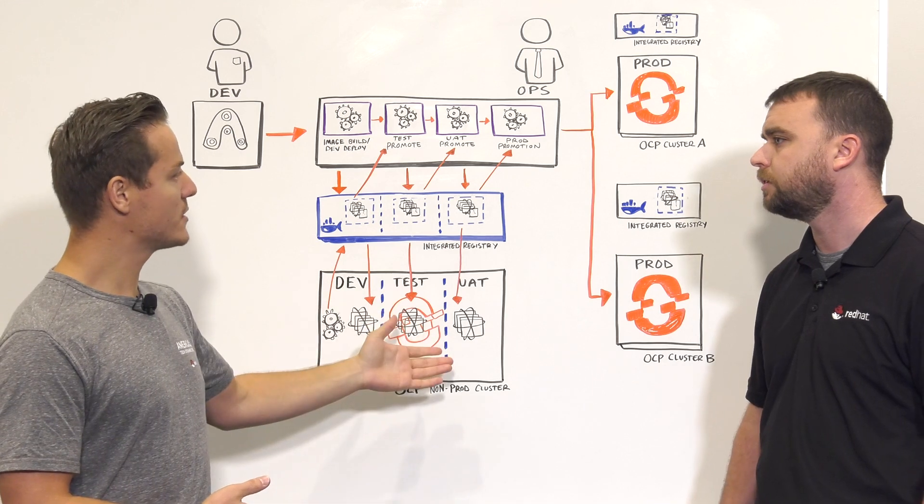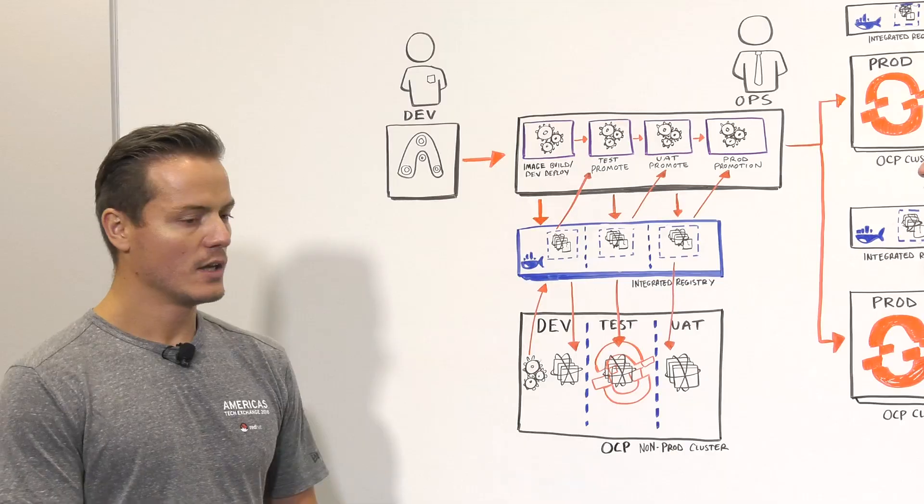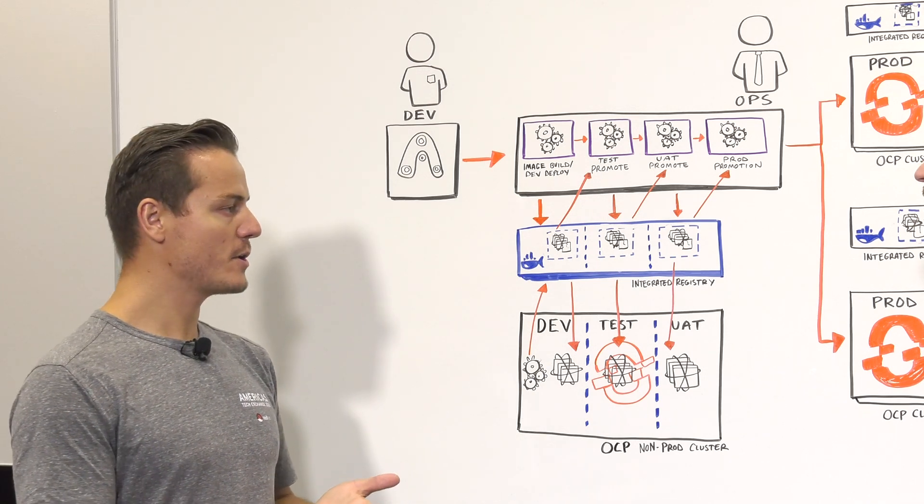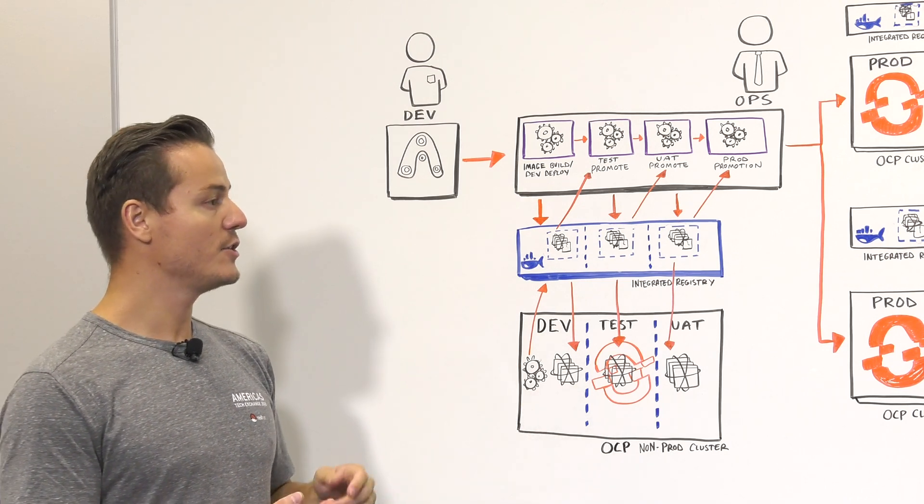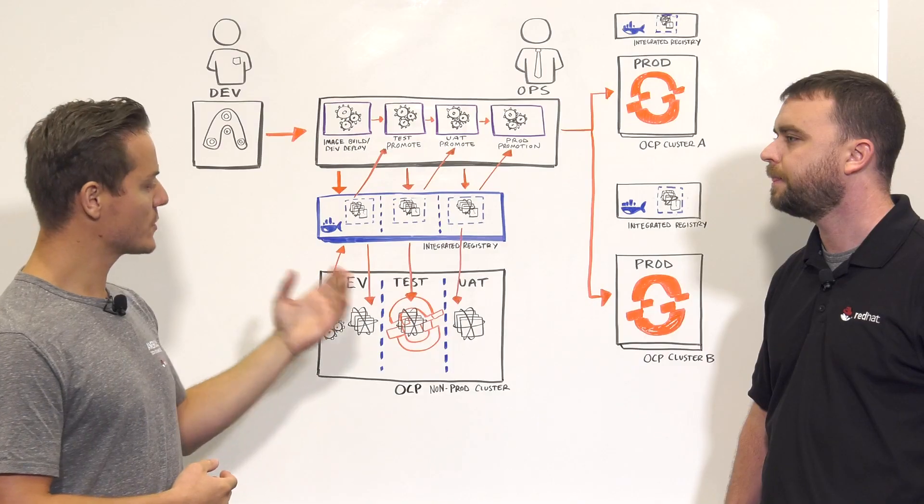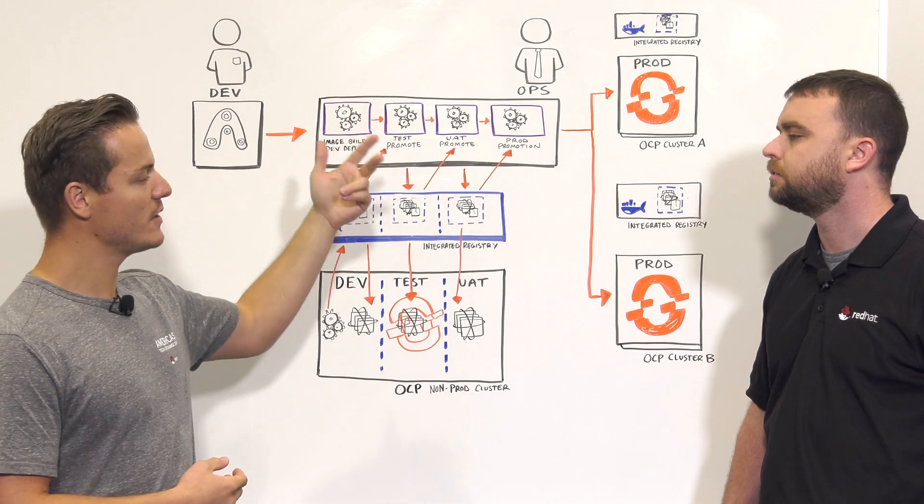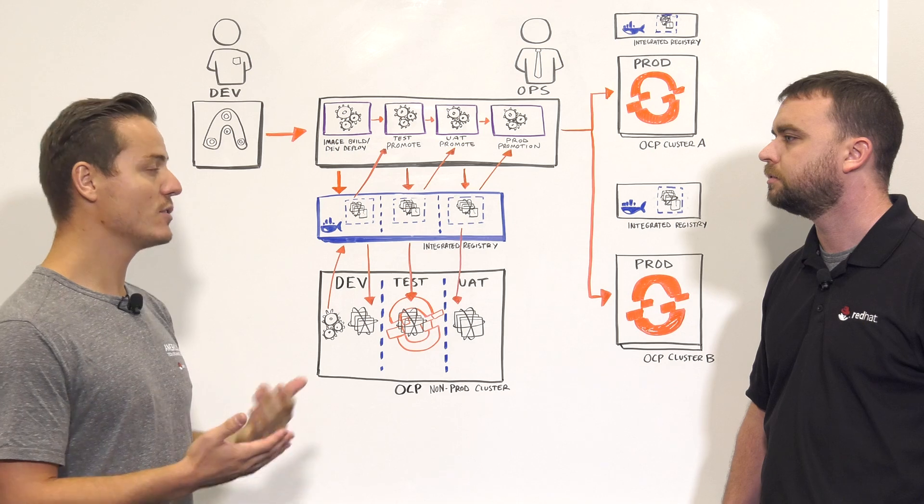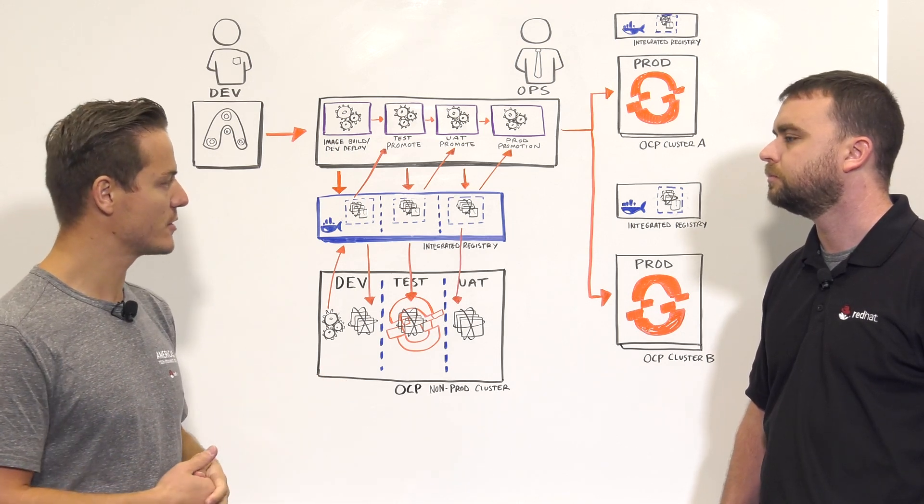So once we're ready to take our image from UAT into our production clusters, we'll use a tool like Skopeo. And if you haven't heard of Skopeo, it's a tool that is purpose-built for moving images across clusters. And you can tag them, move them, and you can also sign them as well. So once we are ready to do that, we'll use Skopeo to copy that image into the integrated registries of each of those clusters, being on-premise, in the cloud. And really, it doesn't matter how many clusters you have. You can still utilize that tool.